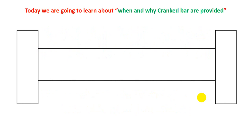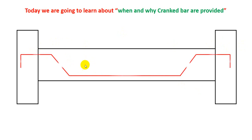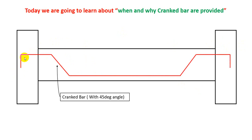So first of all, suppose this is a beam. This is the column face on both sides — both are column faces — and this is the beam with fixed support. We all know that in RCC structure, all beams are connected with columns with fixed support. Sometimes the designer or worker provides rebar in the beam with a crank. From that point to that point is a crank, and this is one single bar that has been cranked for the beam.